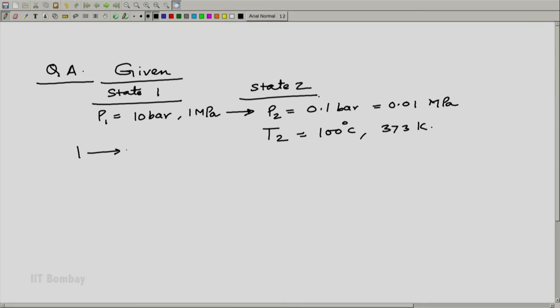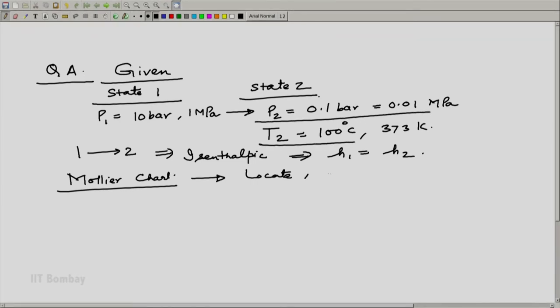We know that the process from 1 to 2 is isenthalpic throttling process, which means that h1 is equal to h2. So, what we can do is using HS diagram or Mollier chart we can easily locate the state 2 because we know two properties P2 and T2. So, locate point 2 on this Mollier chart and being an isenthalpic process from 1 to 2, from 2 we can get state 1.